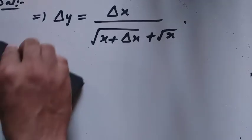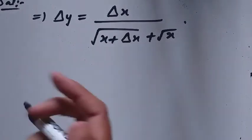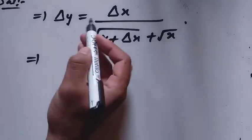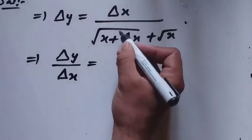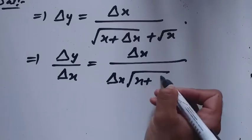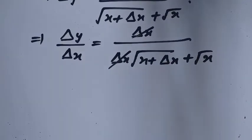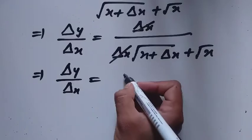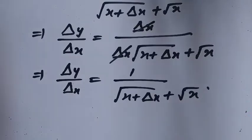Now we can find the rate of change of delta y with respect to delta x. For the instantaneous rate of change, I will divide both sides by delta x. So delta y divided by delta x equals delta x divided by delta x times under root of x plus delta x plus under root of x. The delta x terms cancel, giving: delta y over delta x equals 1 divided by under root of x plus delta x plus under root of x.